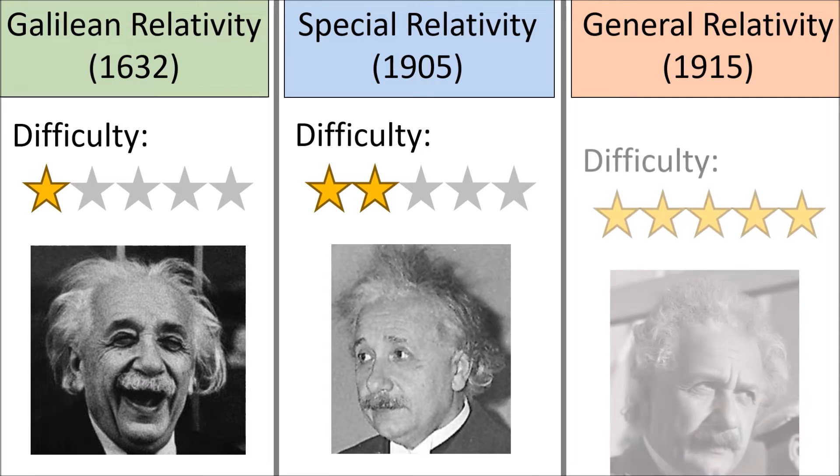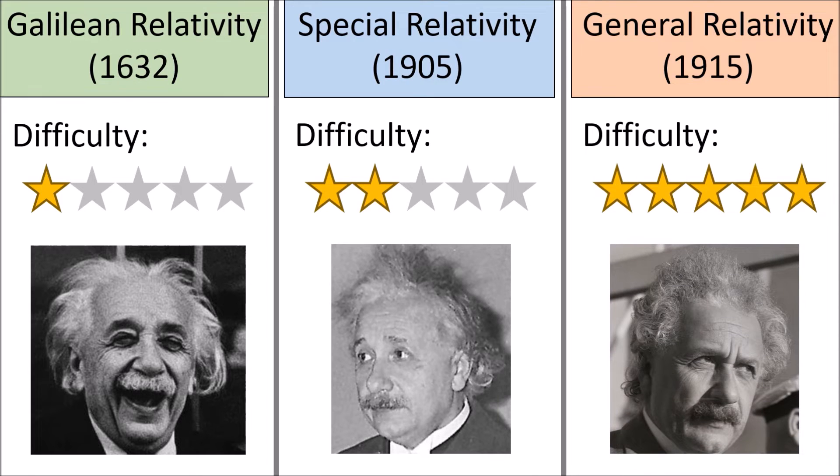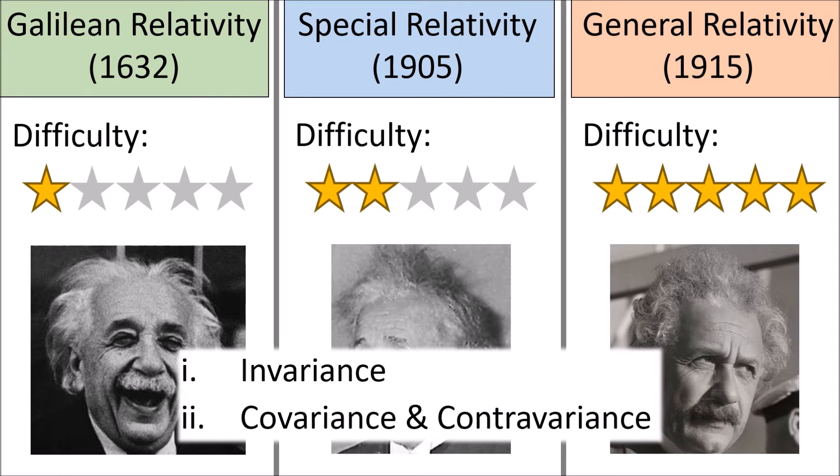Meanwhile, general relativity has a reputation for being very difficult, and I'm a little bit afraid that some people watching might give up before they ever finish it. This is why I'm introducing the ideas of invariance, covariance, and contravariance as early as possible, even if the ideas are a little bit abstract. These ideas are found in all three theories of relativity, and the sooner you understand them, the easier things will be in the future.